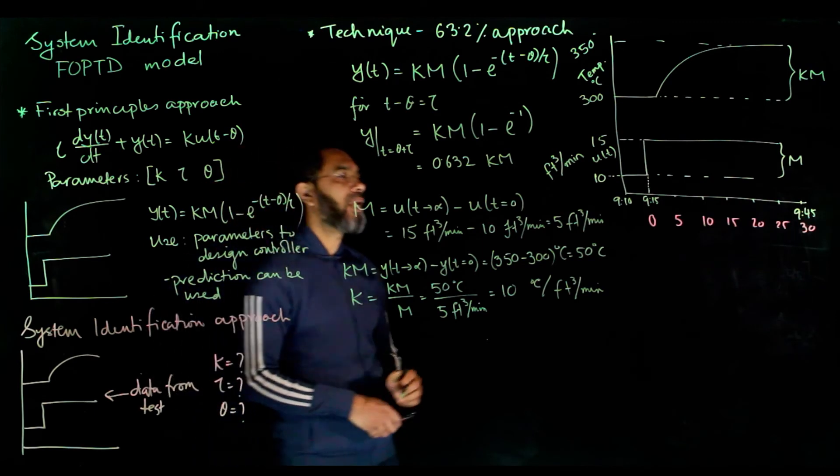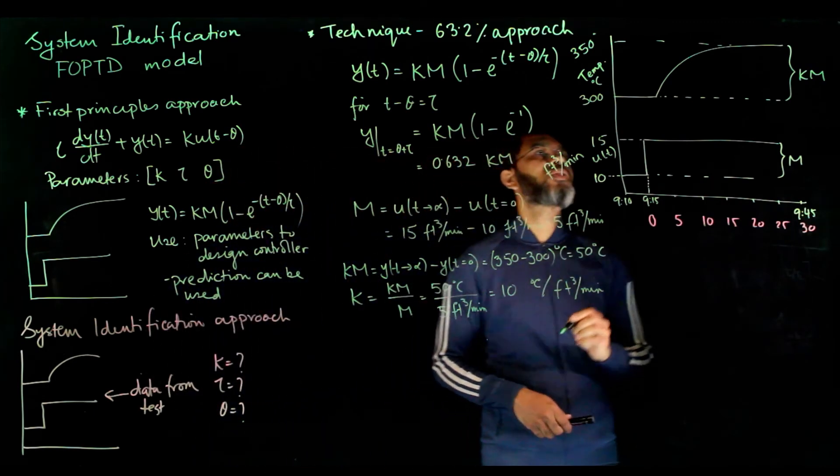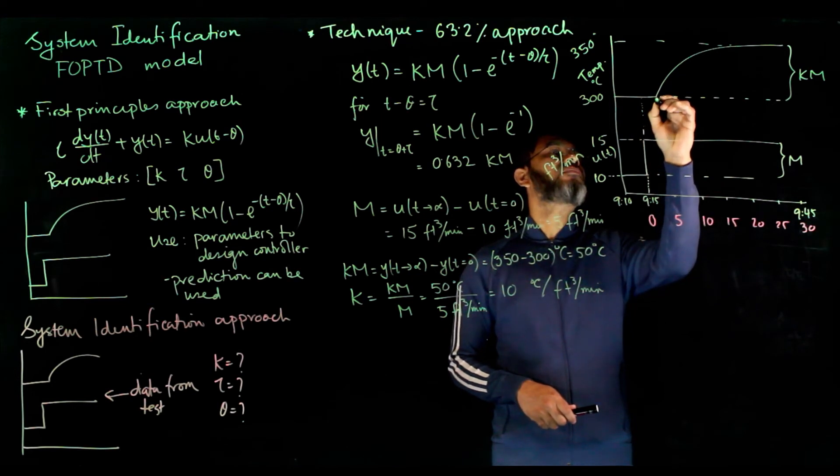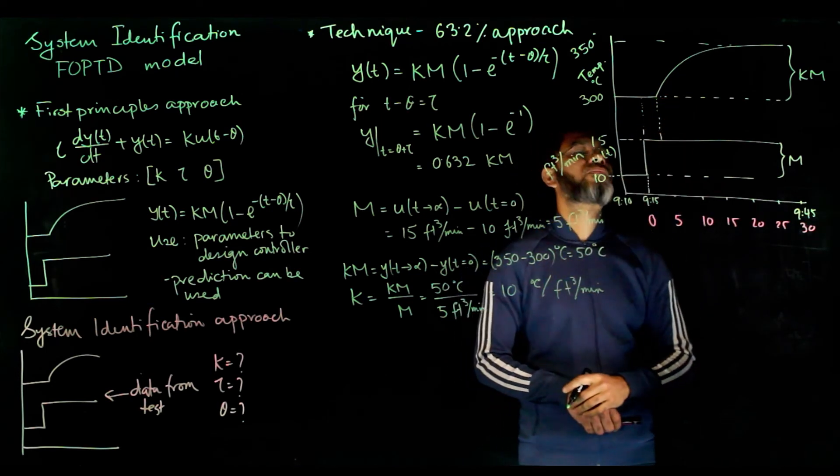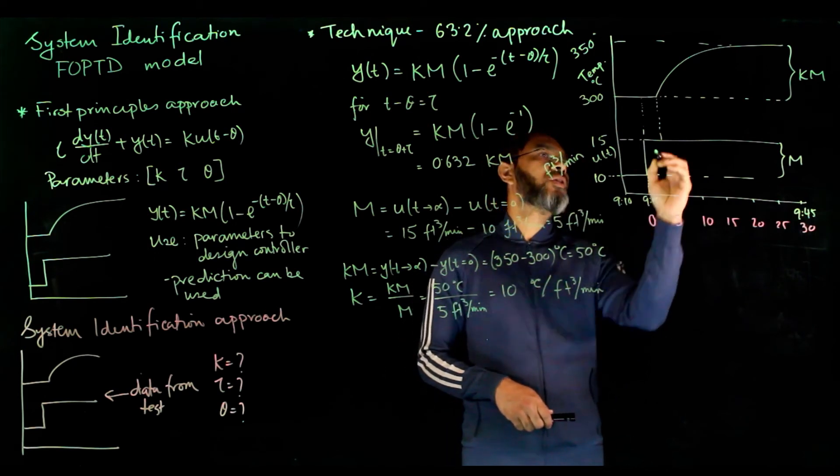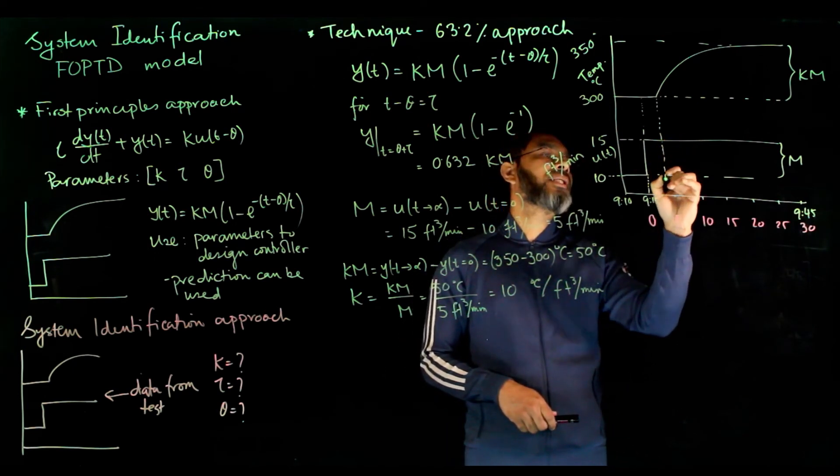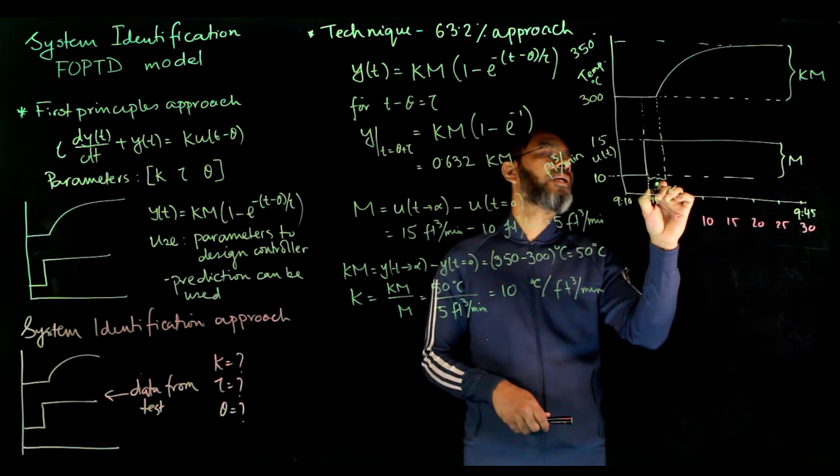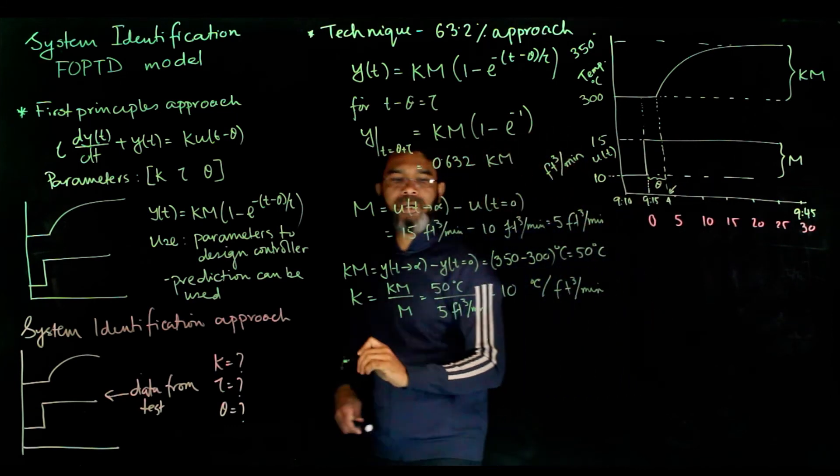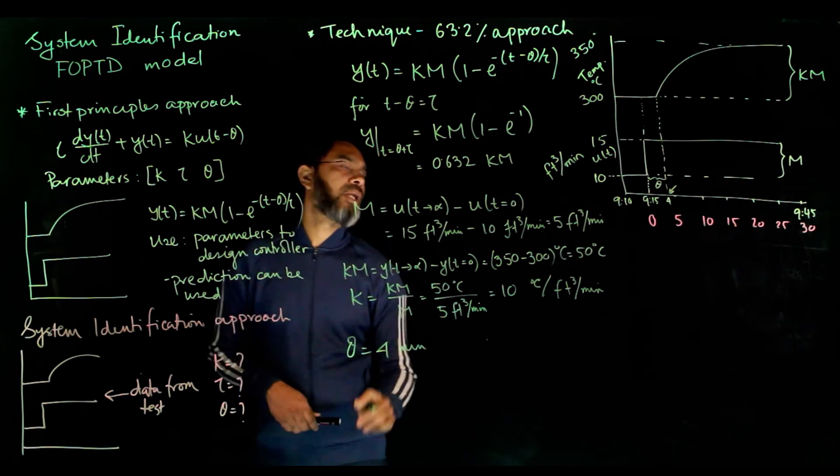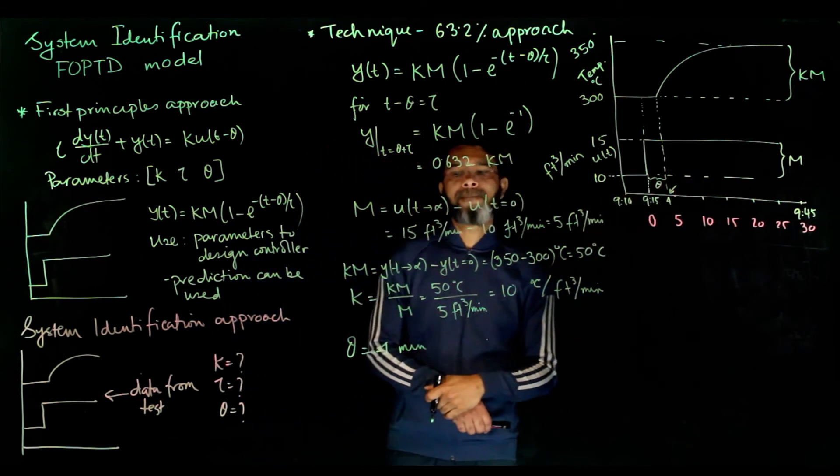To get theta, the time delay, we see the time delay is defined as when you make a change in the input and when the output starts to change. Suppose you make the change in the input at time zero. We look at this axis. If this value is suppose 4, from directly here you get theta equals 4 minutes. So theta equals 4 minutes, you directly get it from there.